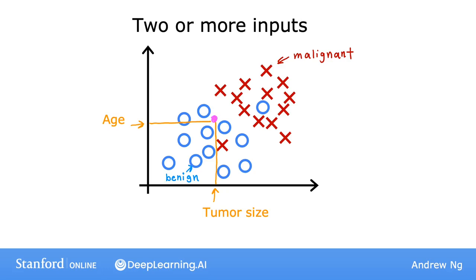Well, given a dataset like this, what the learning algorithm might do is find some boundary that separates out the malignant tumors from the benign ones. So the learning algorithm has to decide how to fit a boundary line to this data. The boundary line found by the learning algorithm would help the doctor with the diagnosis. In this case, the tumor is more likely to be benign.